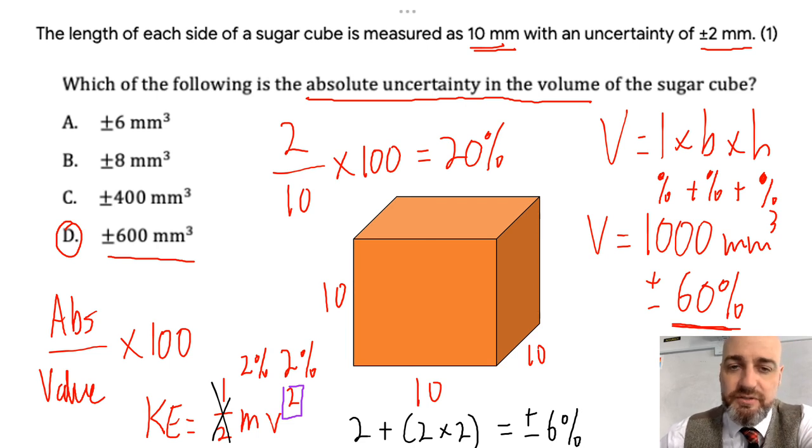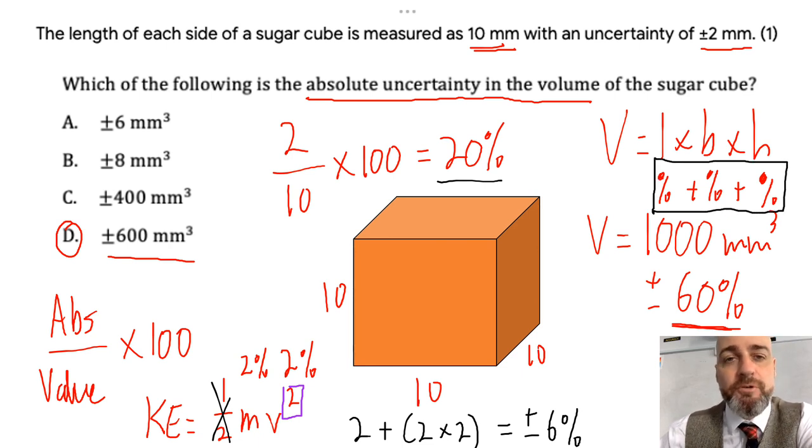So when you've got powers, it's a little different, but this question here itself is quite difficult because you're mixing between absolute uncertainties, percentage uncertainties, and then you have to compound the uncertainties as well. Here we go.